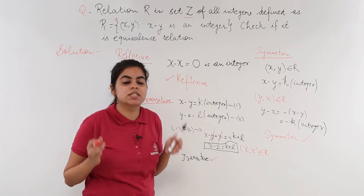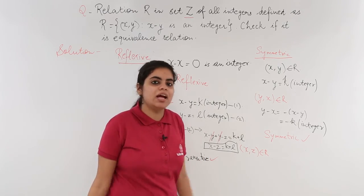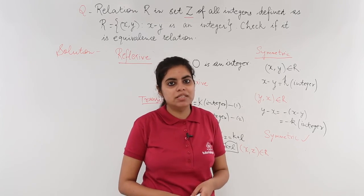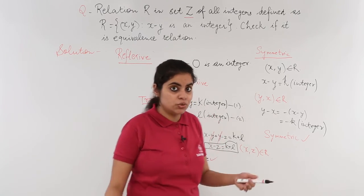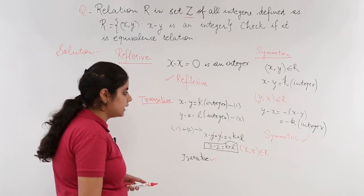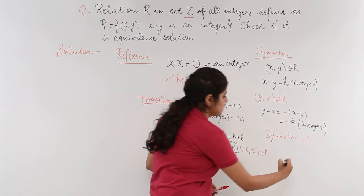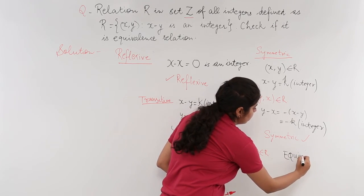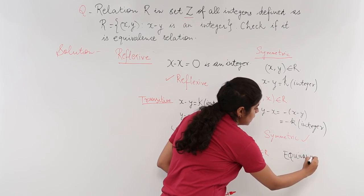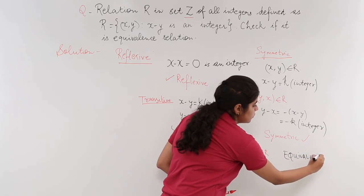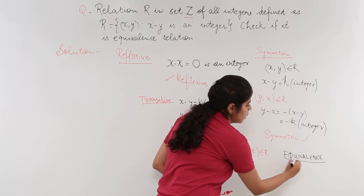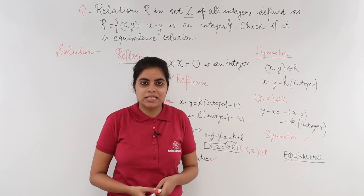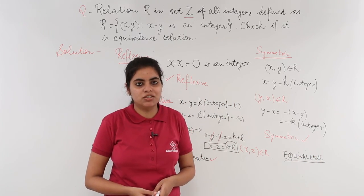Since the relation is reflexive, symmetric, and transitive, it is an equivalence relation. This was the fourth sample problem on equivalence relation.